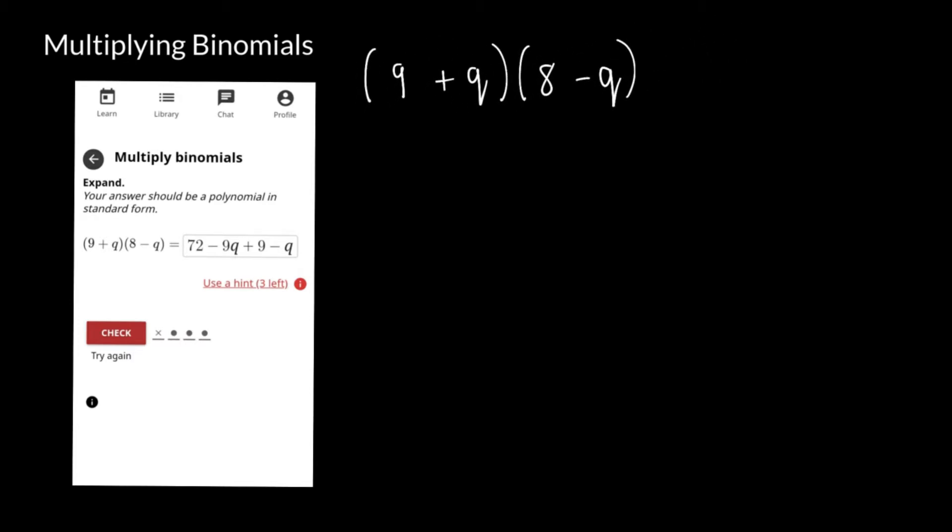Nine by eight, nine by negative q, q by eight, and q by negative q. So we'll have 9 multiplied by 8, that's 72, you're correct. And then we'll have 9 multiplied by negative q, minus 9q. Q multiplied by 8, that's plus 8q. And then q multiplied by negative q, that's negative q squared.